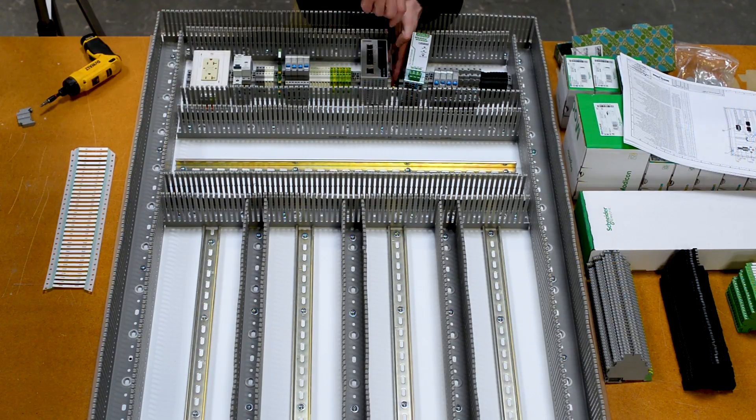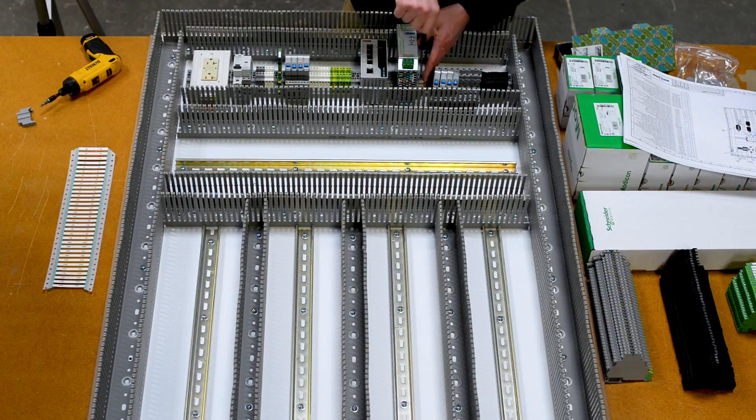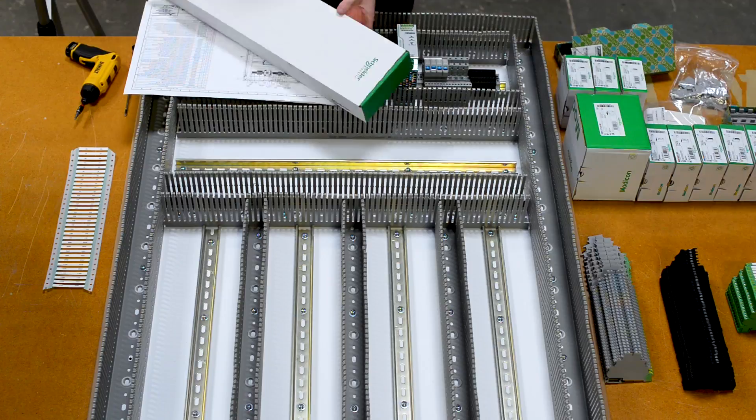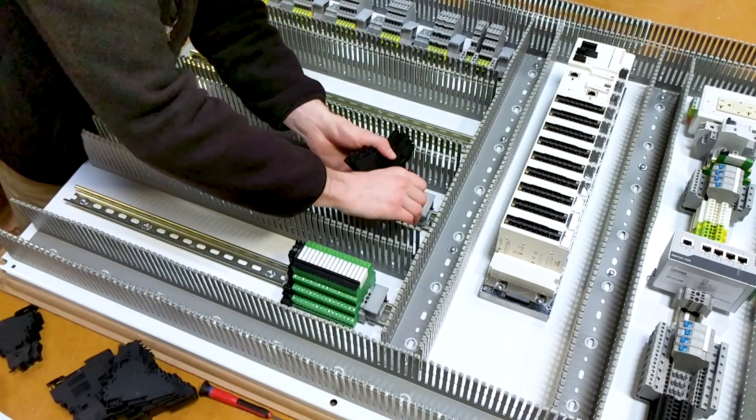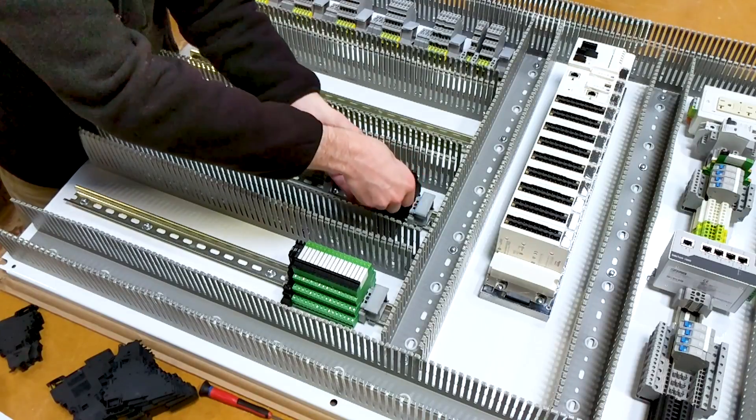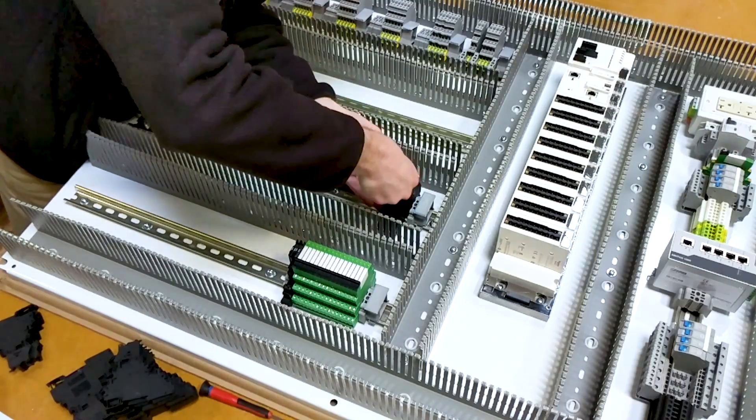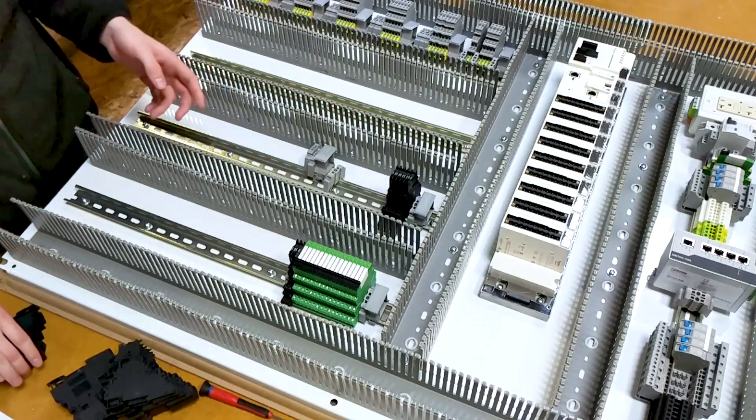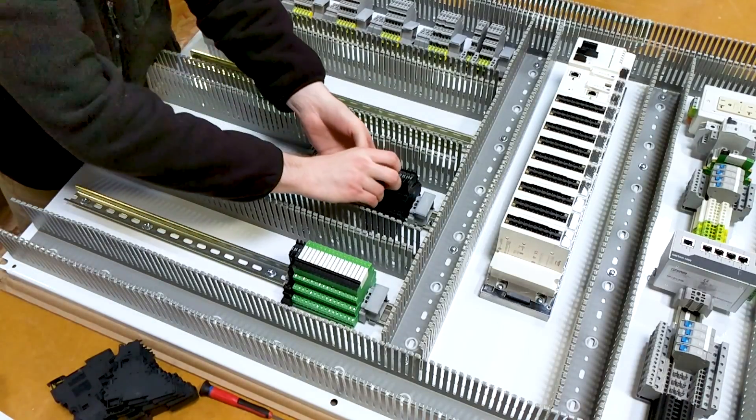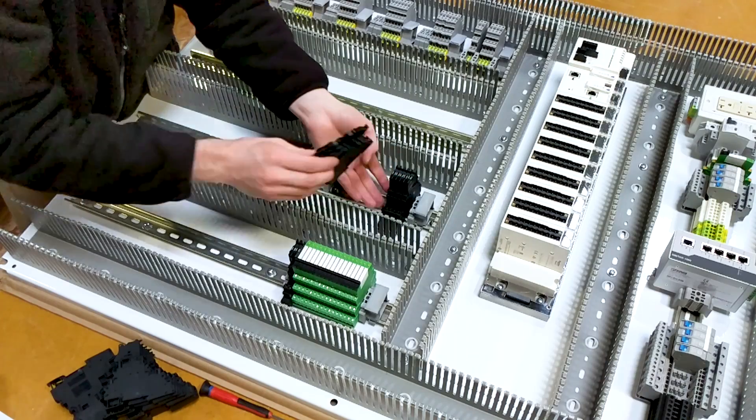We also want to make sure that as we're securing all of this electrical hardware to the DIN rail, that we are making a full secure connection to that DIN rail. If the hardware does not fully seat to the DIN rail, it can come loose over time and fall off. So we again want to make sure that we secure everything properly to the DIN rail and it fully clips into place as we're demonstrating in this video.